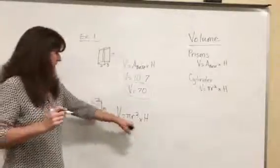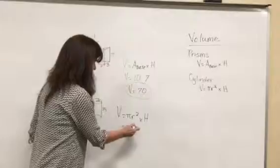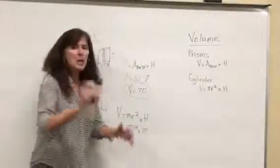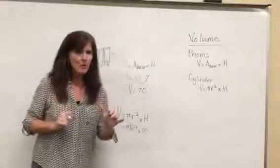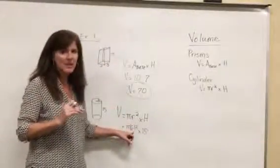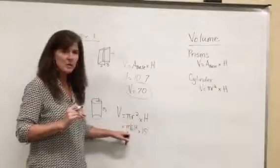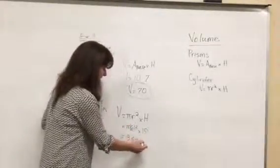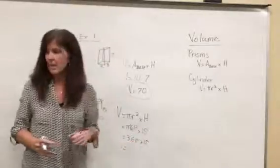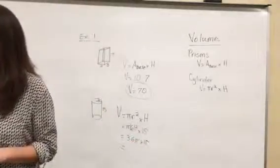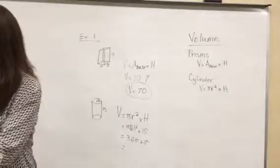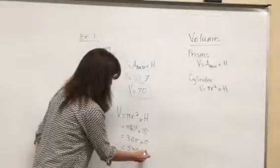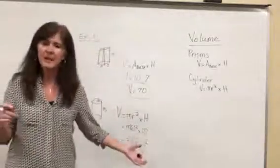r is 6, so we put in pi times 6 squared times height, which is 15. Make sure you follow order of operations. For example, you need to square the 6 before you multiply it by pi. So this is going to be 36 pi times 15, and the answer is 540 pi.